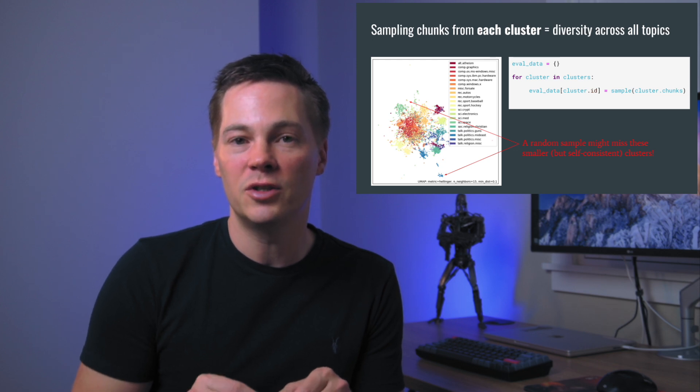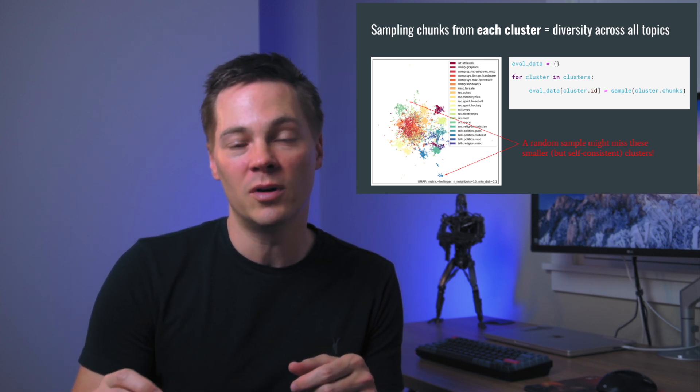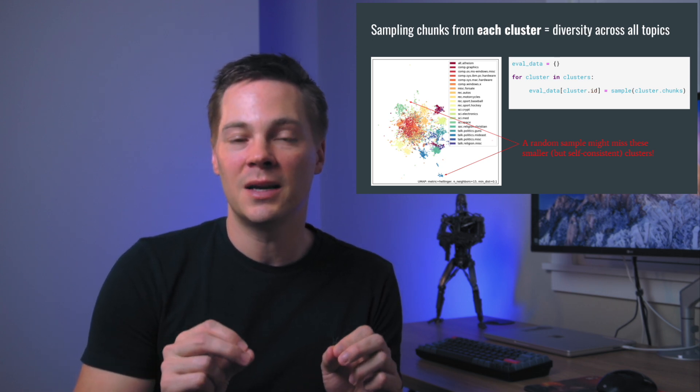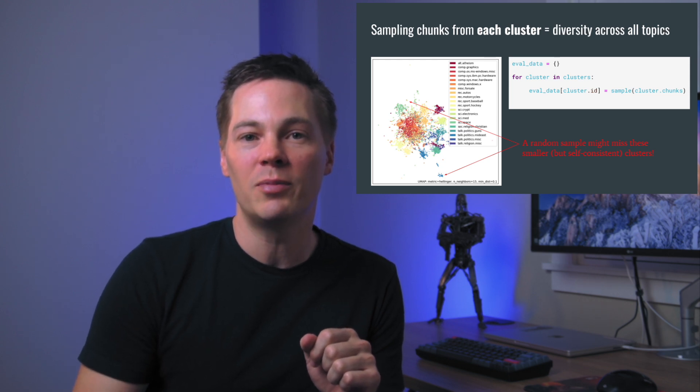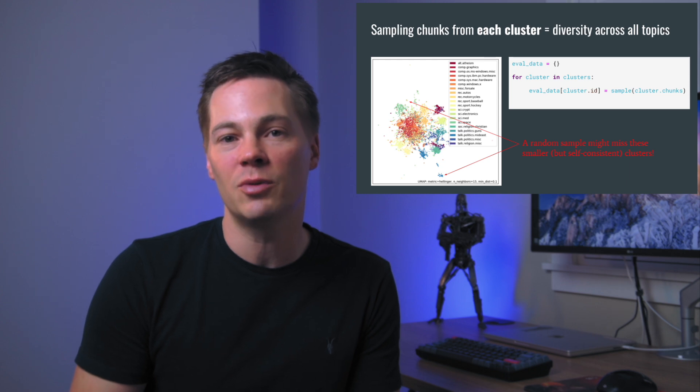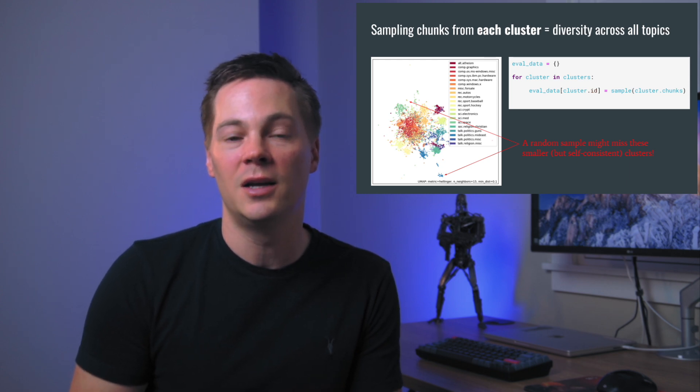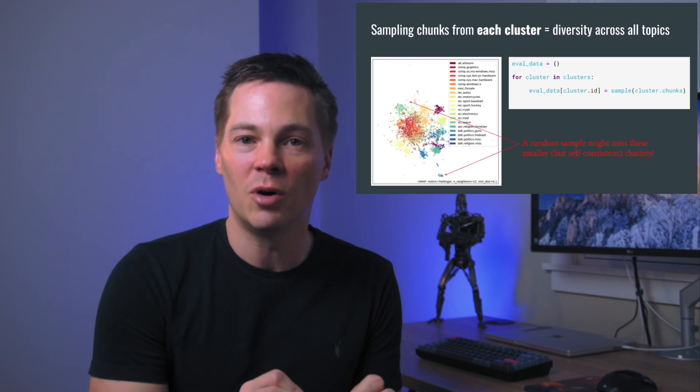Next, let's talk about sampling. We have our clusters, and we want to take points out of each one. This is different from randomly sampling our data. We sample from each cluster because we've identified these as the major topics inside all of our data, and we want a diverse representation. If we just took a random sample, some clusters are very large and some very small — the chance of hitting a tiny cluster is very low. By sampling from each cluster deliberately, we ensure representation across the full embedding space, which is how we get a diverse evaluation data set.